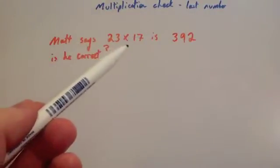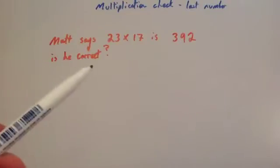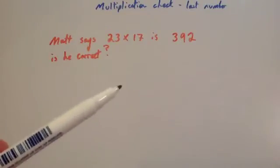Matt says that 23 times 17 is 392. Is he correct? Well, I can see straight away that he's not correct.